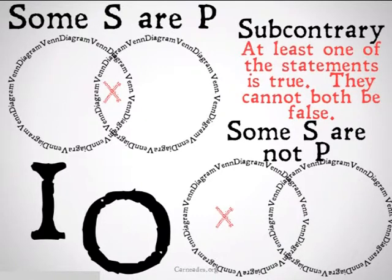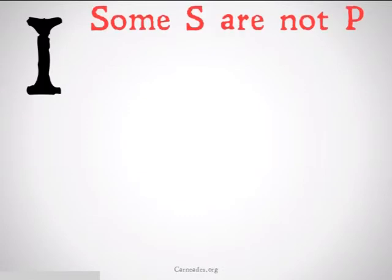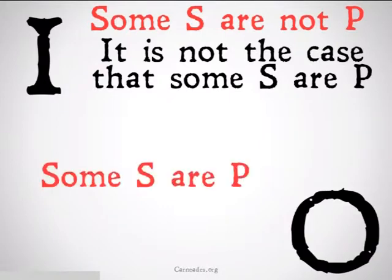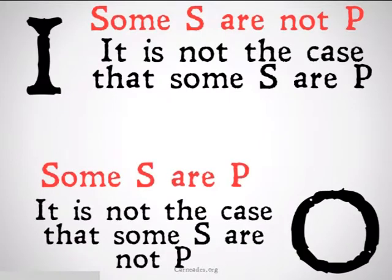Let's take a look at examples of fallacious arguments. You cannot go from 'some S are not P' to 'it is not the case that some S are P,' nor can you go from 'some S are not P' to the statement 'some S are P.' Similarly, you can't go from 'some S are P' to 'it is not the case that some S are P,' nor can you go to the statement that 'some S are not P.'